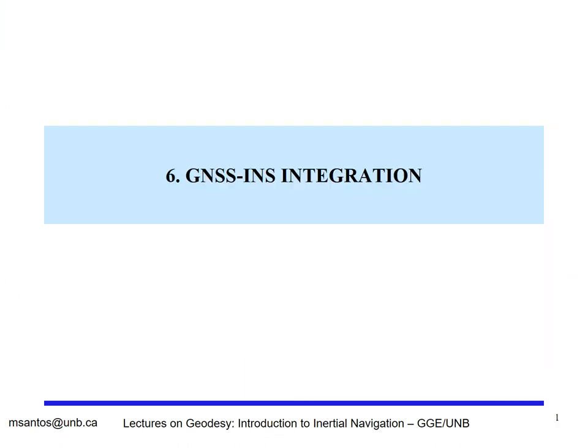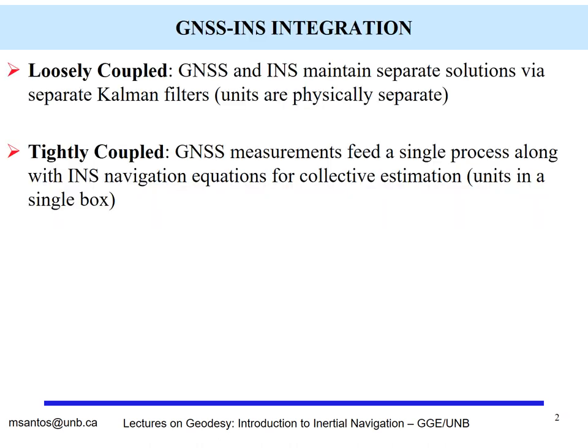A few words about GNSS and inertial integration. There are two types of integration. One is called loosely coupled, the other is called tightly coupled. Loosely coupled is when the final parameters as determined by GPS and by INS feed a Kalman filter. Tightly coupled is when the measurements themselves feed the Kalman filter.